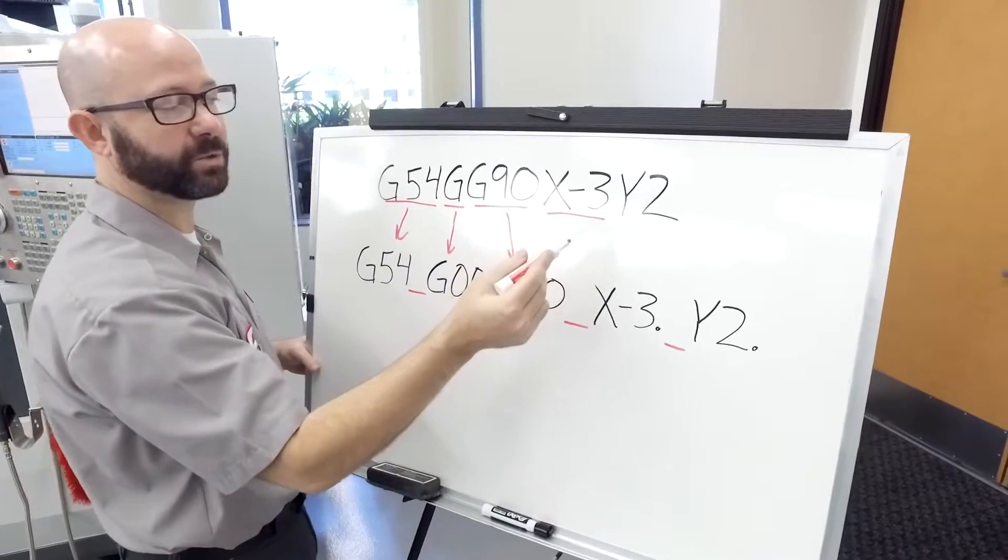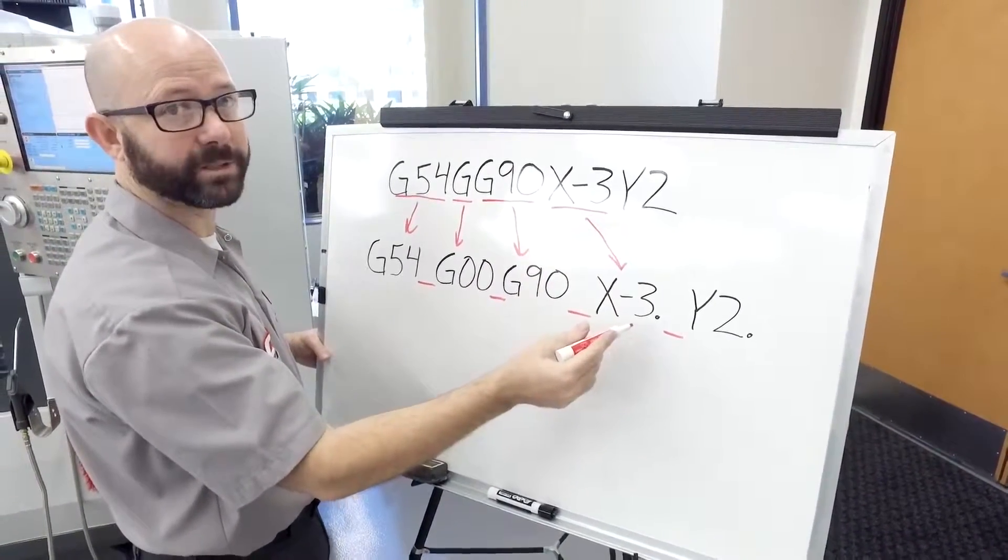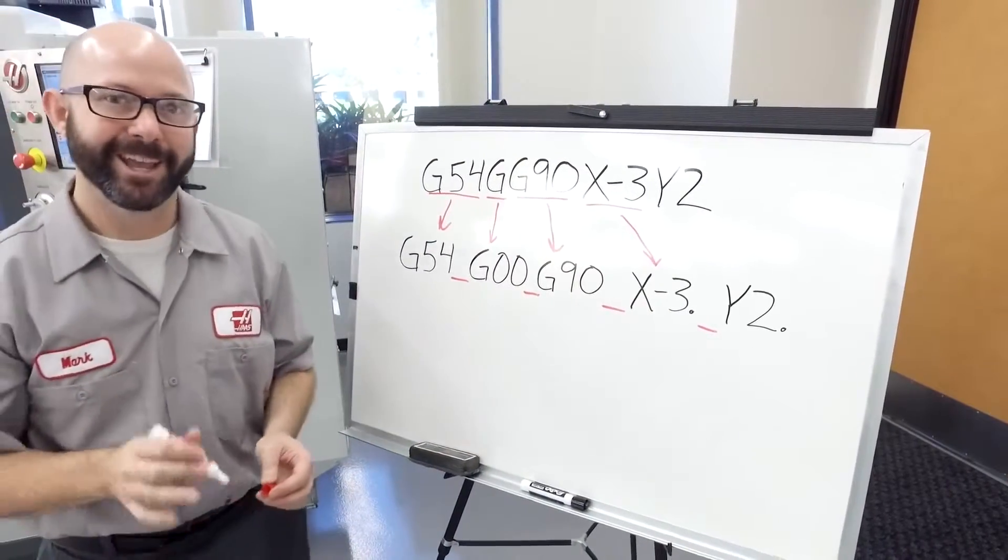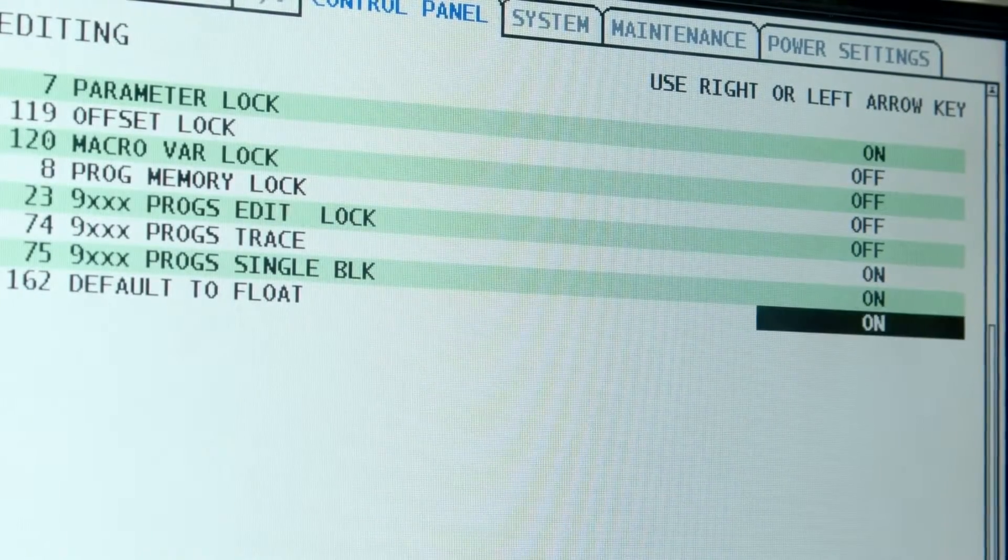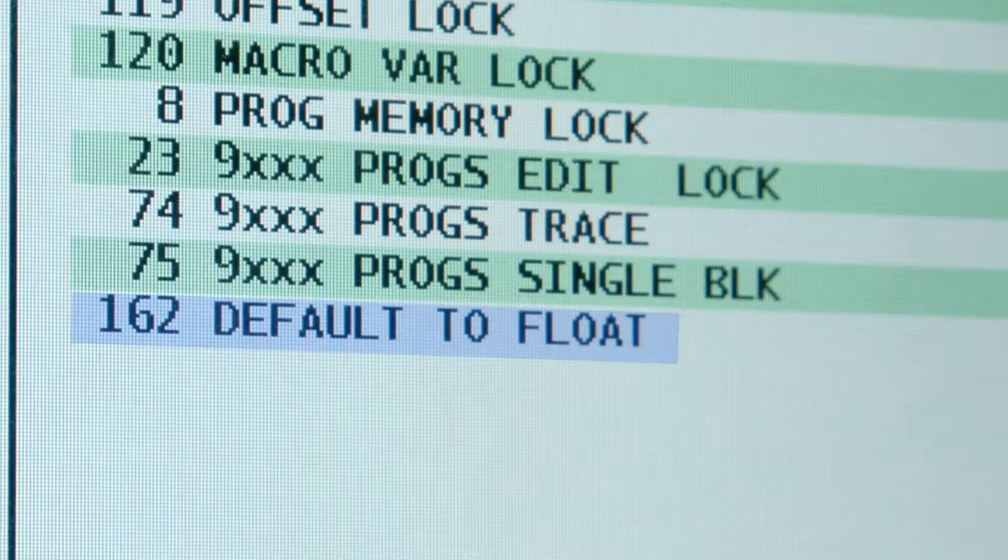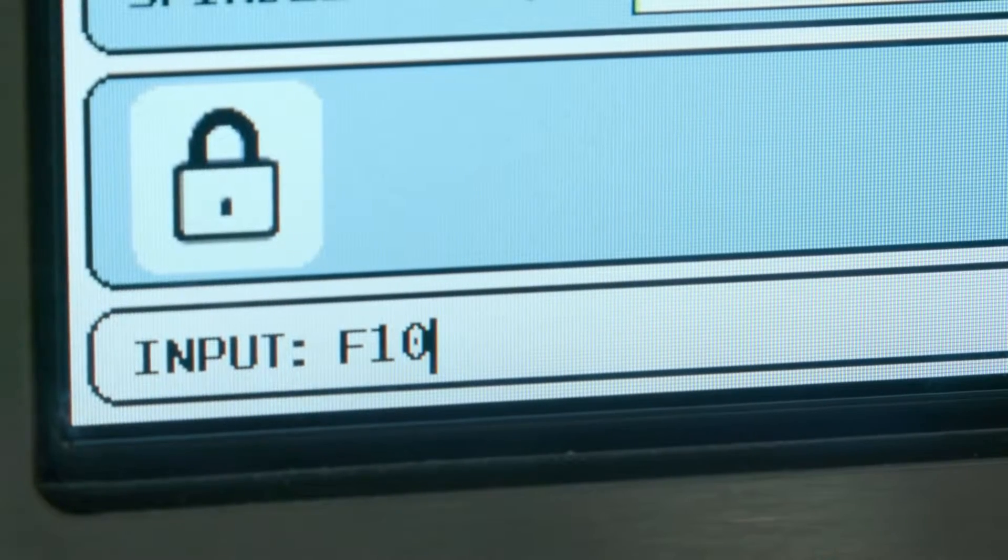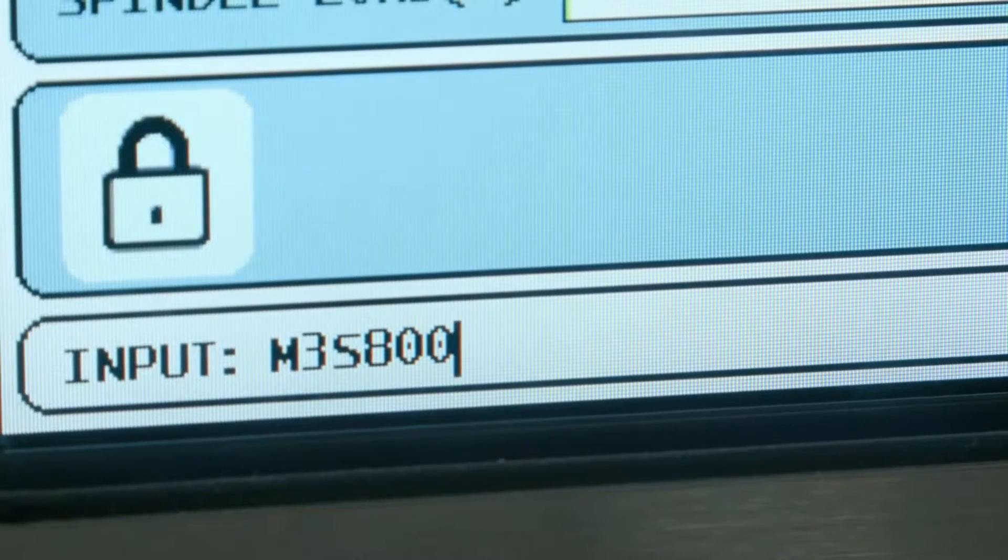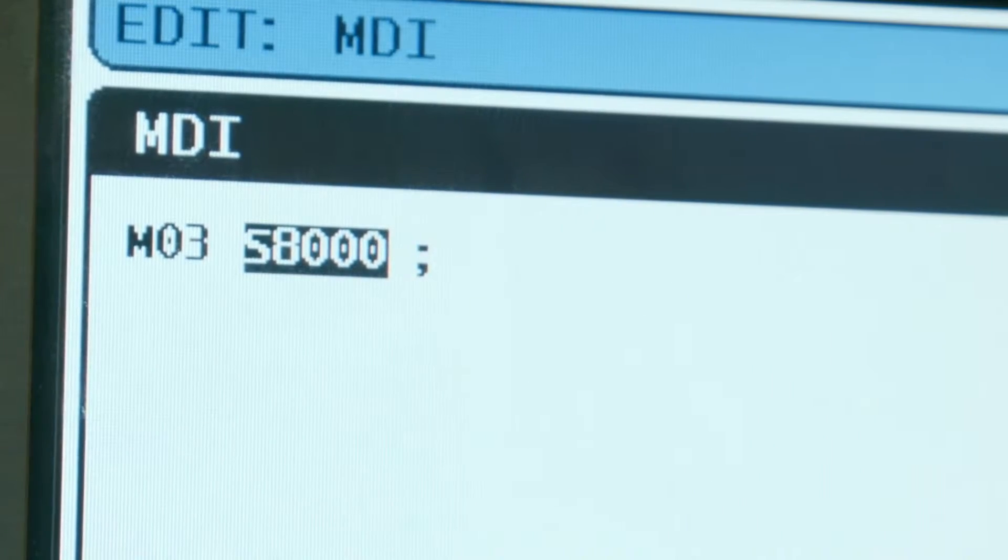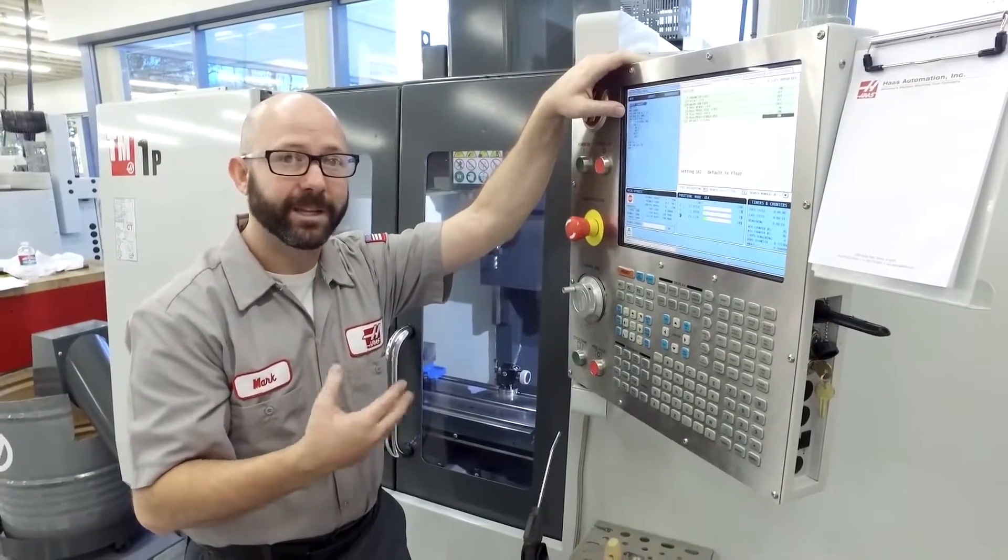Here I entered X minus 3 and the control added the decimal point for us. Right here we cheated a little bit and I'm going to show you how to cheat as well. We turned on setting 162 default to float. This adds decimal points to our code as we enter it when appropriate. In my program, I entered F100 and it shows up on my screen as F100 decimal point. I also entered S8000 and it left it alone, because the control is smart enough to know that S codes don't require decimal points.